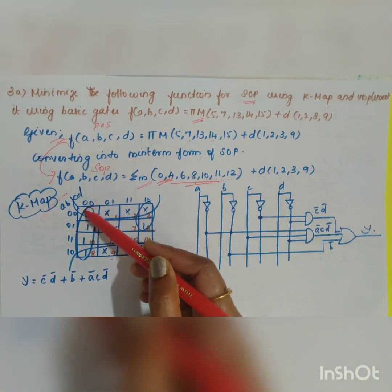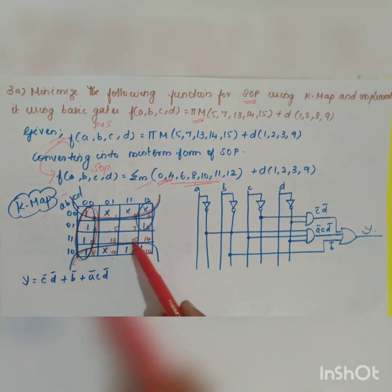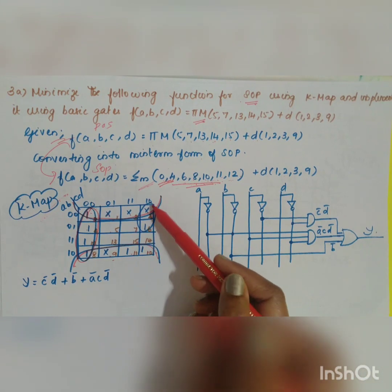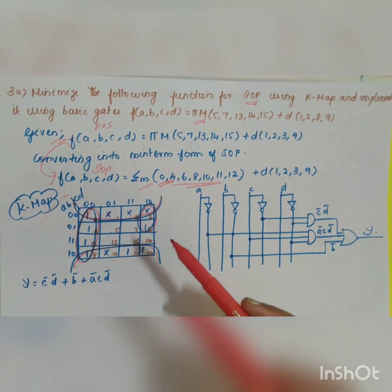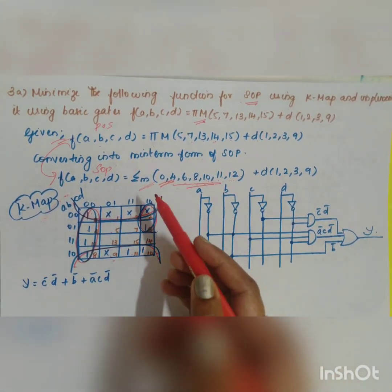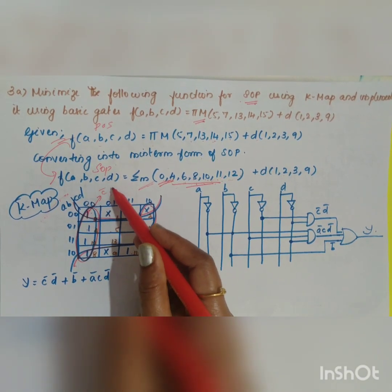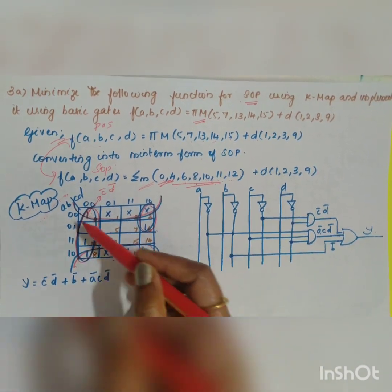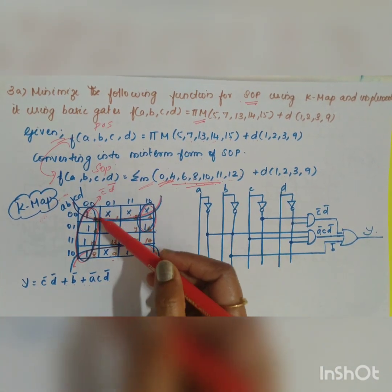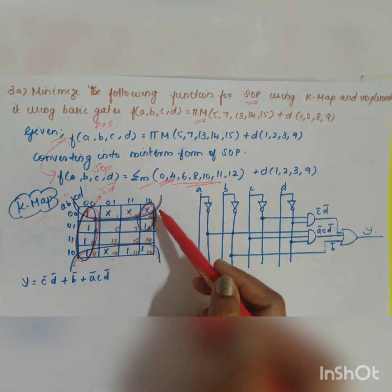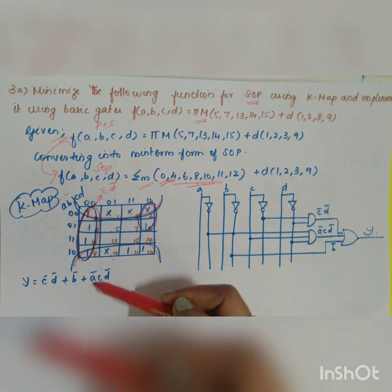For grouping, you can group these four ones together, giving a group of 4. These two adjacent cells can be grouped together, and the remaining 1 can be grouped with the don't care. After simplification, the sum of min terms expression y equals c̄d̄ plus b̄ plus ācd̄.